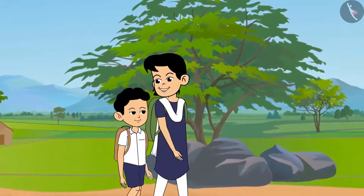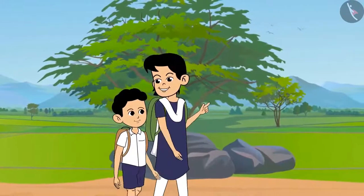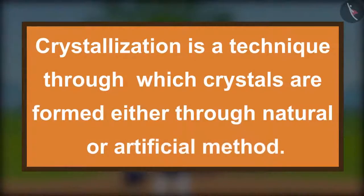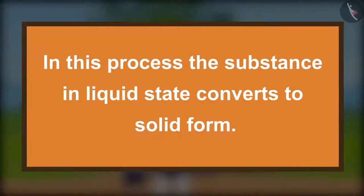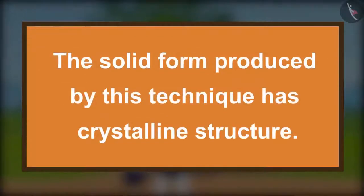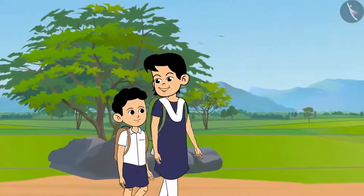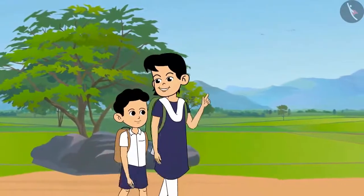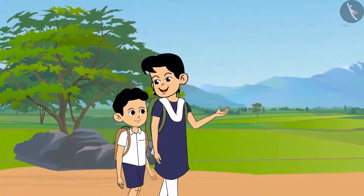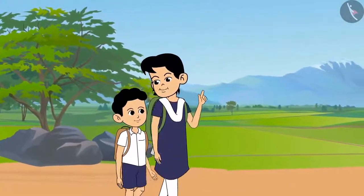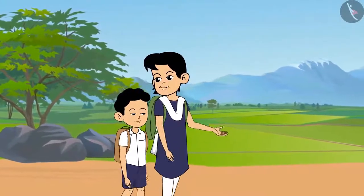Crystallization is useful because it is a technique through which crystals are formed either through natural or artificial methods. In this process, a substance's liquid state converts to solid form, and the solid produced has a crystalline structure. Crystallization is used to purify impure solid substances. It is a physical change because matter can easily come back to its original form. Another example is the purification of salt — impure salt crystals from sea water are purified by crystallization, and salt gets converted into larger crystals.